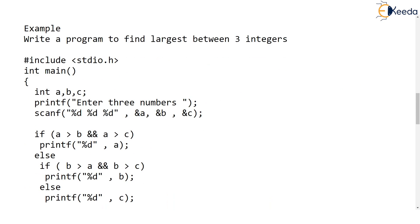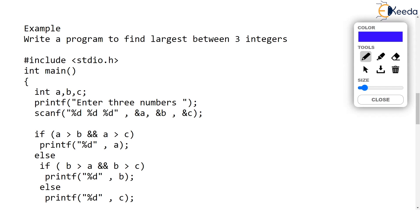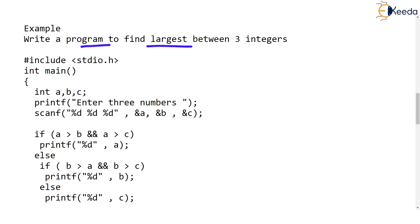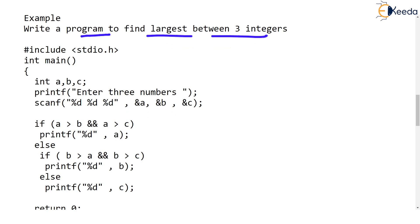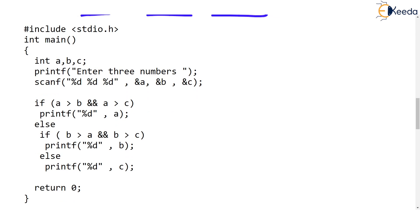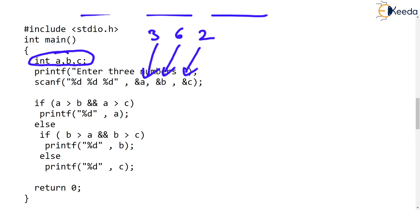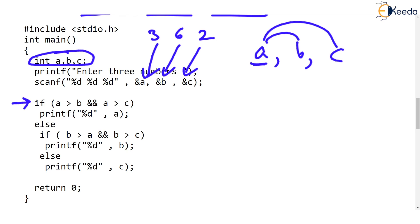Let's see an example where we use the 'and' operator to join two conditions. We are asked to write a program to find the largest among three integers — but note that this program is wrong, just an announcement. We declare three integers a, b, c, and ask the user to input three integers. Let's say the user inputs 3, 6, and 2. The program should find and print the largest value, which is 6. We check: if a is greater than b AND a is greater than c, then a is the largest, so we print a.